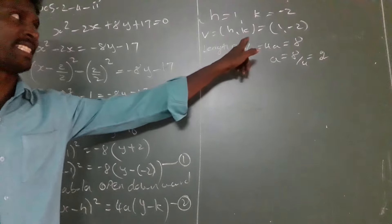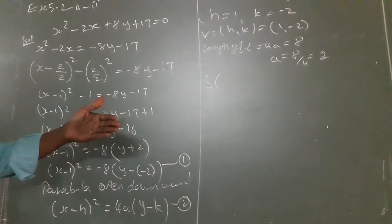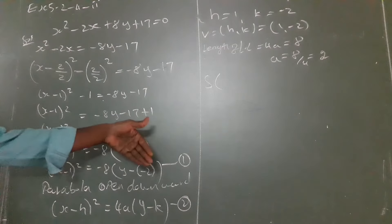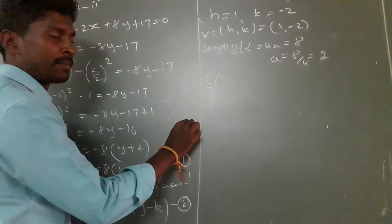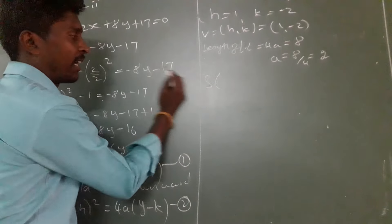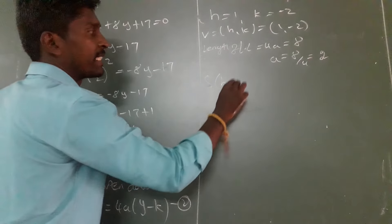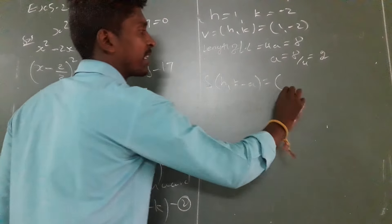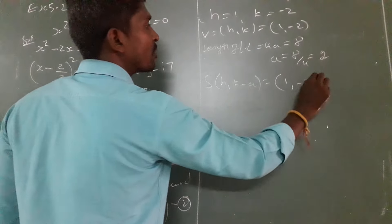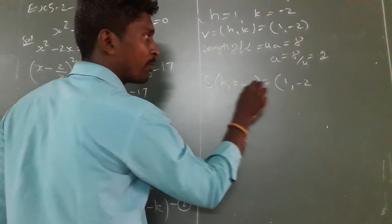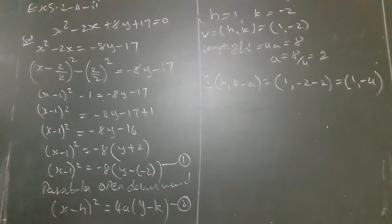So a equals 2. Since the parabola is open downward with vertex (h, k), the focus is at (h, k minus a). Substituting: h equals 1, k equals minus 2, a equals 2. So k minus a equals minus 2 minus 2 equals minus 4. Therefore the focus is (1, minus 4).